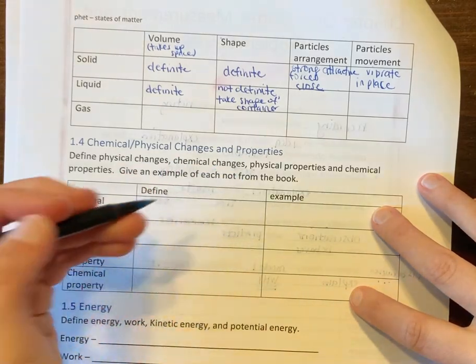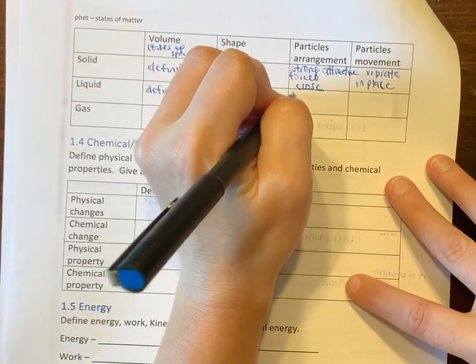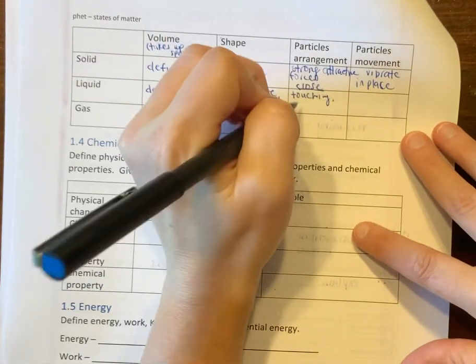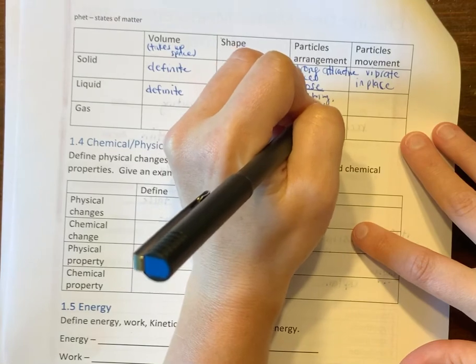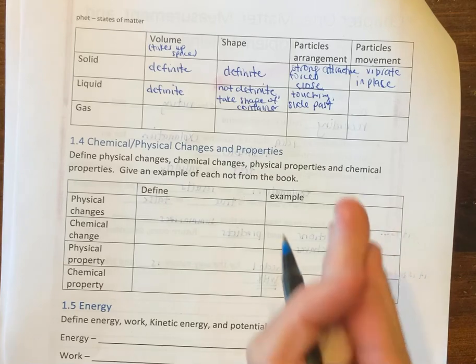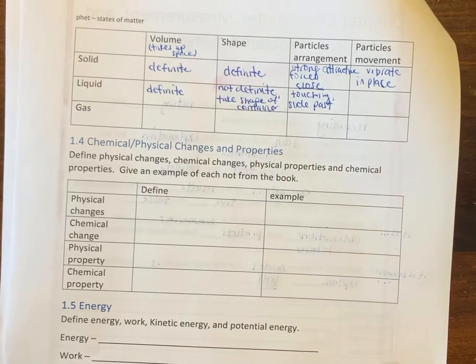Within a liquid, the particles are touching each other. And what they're going to do is they're going to slide past each other. Think about that like a river. Liquids flow. Some flow faster than others, but liquids flow. So they're just kind of sliding past each other as they're moving along.